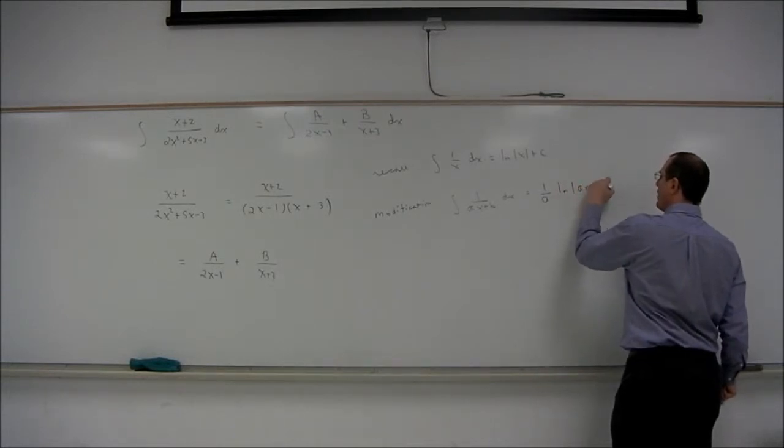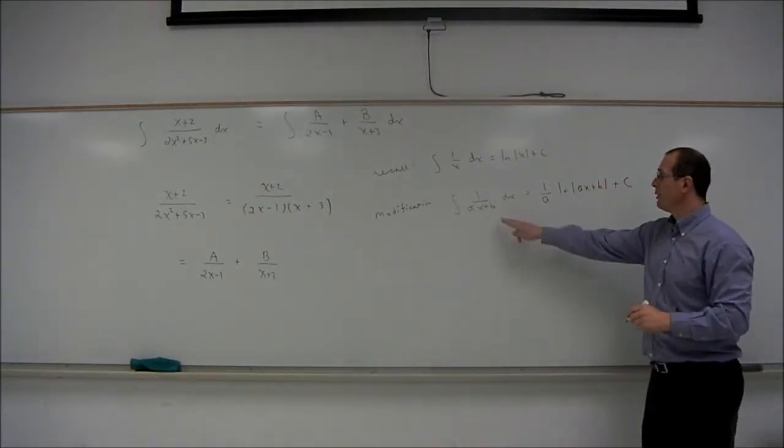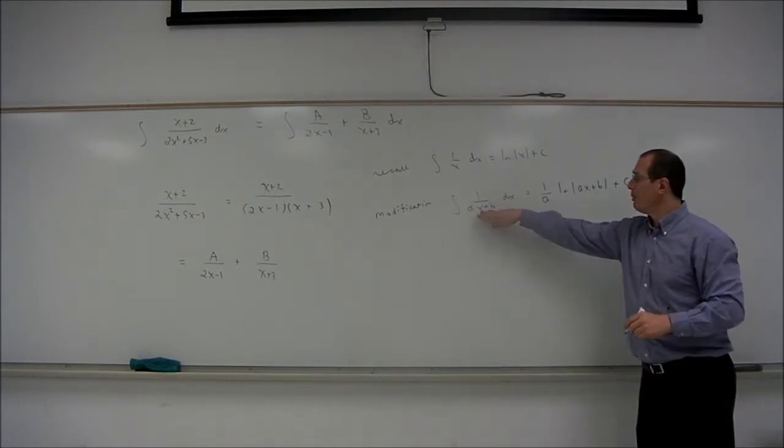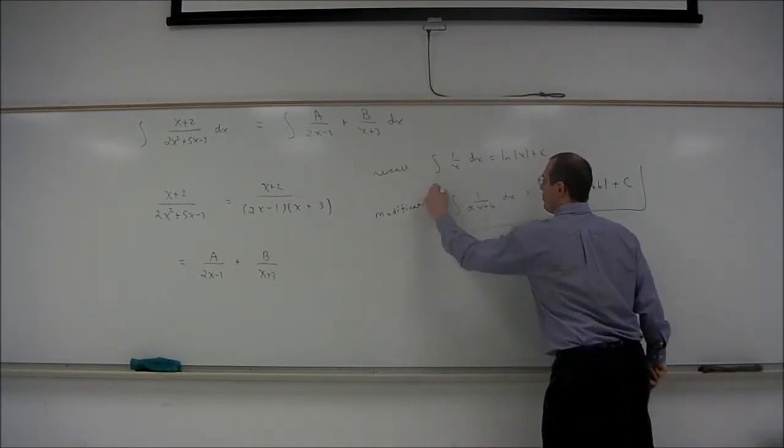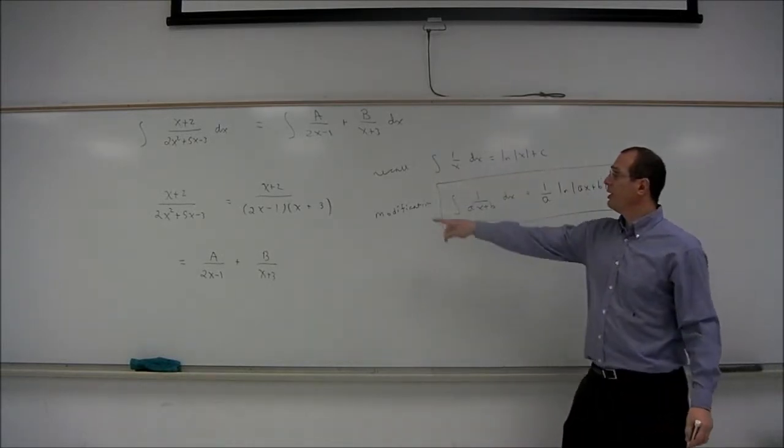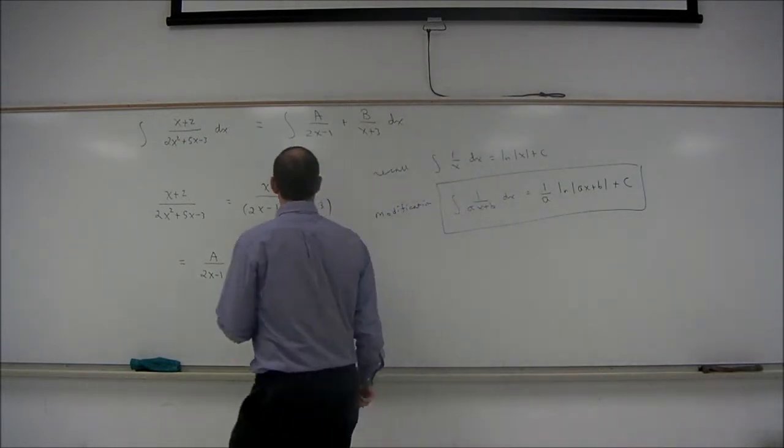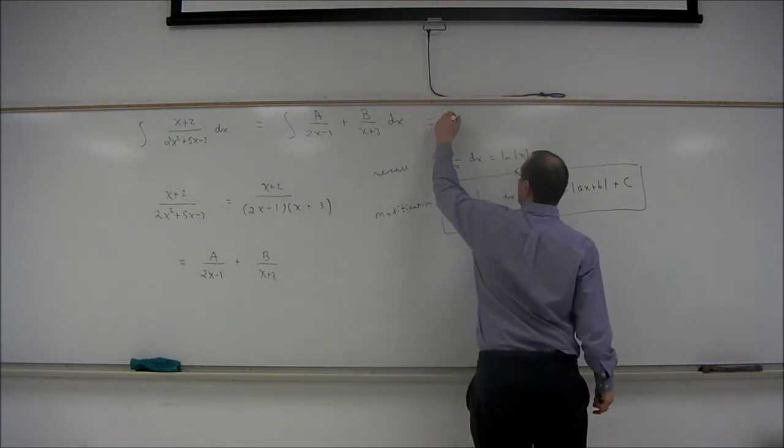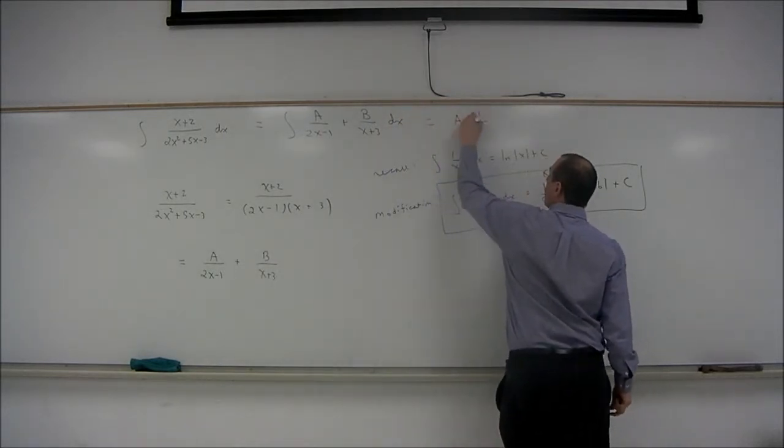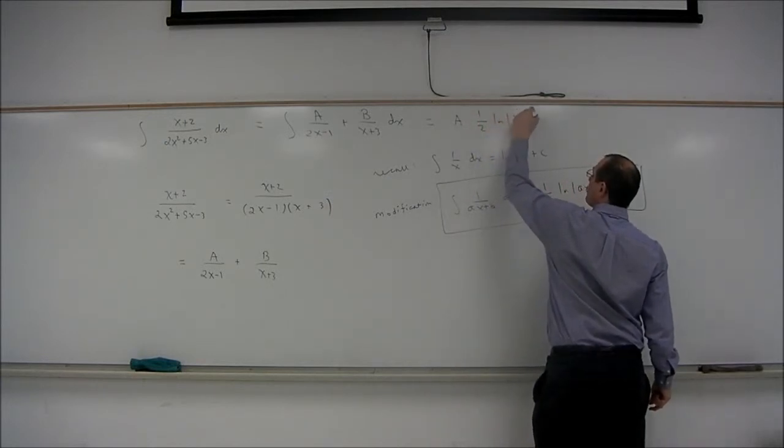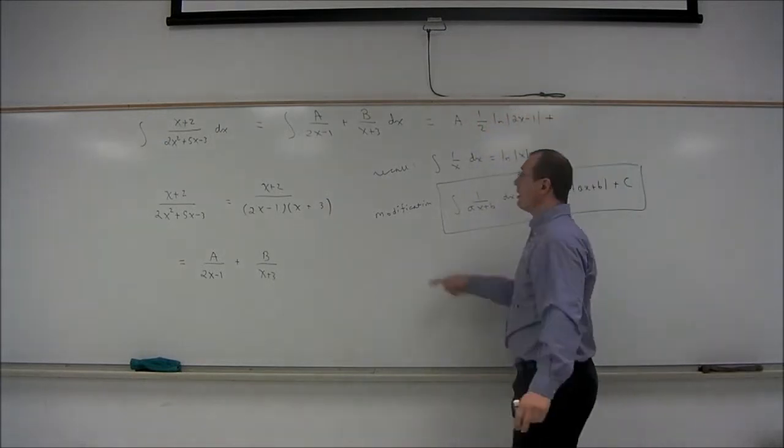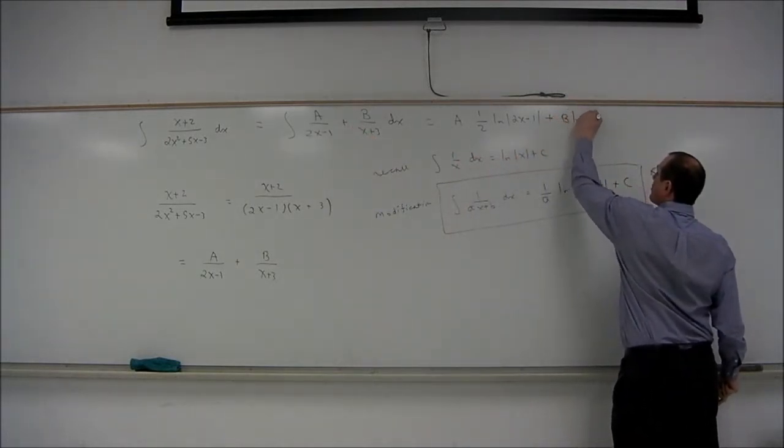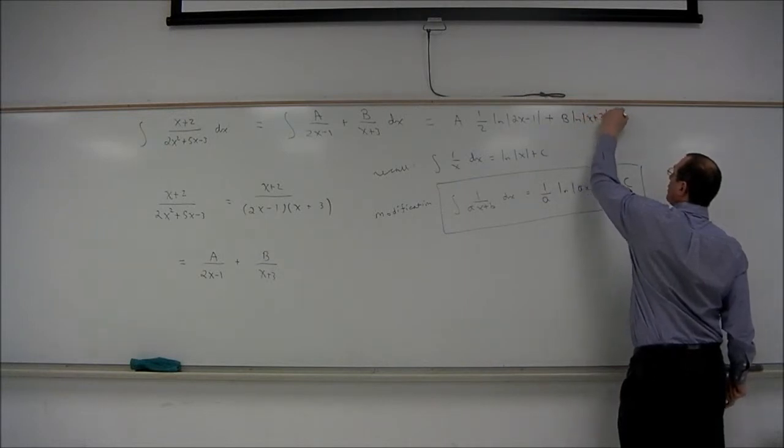That is going to equal 1 over a times the natural log of the absolute value of ax plus b. You could do a u substitution if you like, u equals ax plus b. But we'll just use this formula to integrate each of those. So our integral is a times 1 over 2 times the natural log of the absolute value of 2x minus 1, for the first fraction, plus b times the natural log of the absolute value of x plus 3, plus a constant.